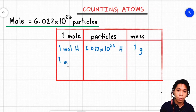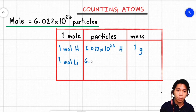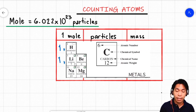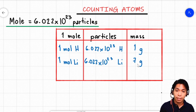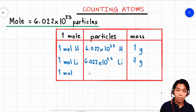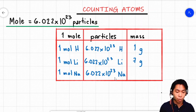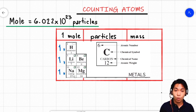If I have one mole of the element lithium, how many particles do we have? We have 6.022 times 10 to the 23rd particles of the element lithium. And what is the mass of one mole of lithium? We have a total of 7 grams. Now lastly, let's identify the mass of one mole of the element sodium. We have Na, and how many particles of sodium do we have? 6.022 times 10 to the 23rd particles of the element sodium. And the mass of one mole of sodium is 23 grams.